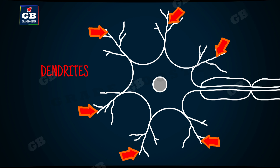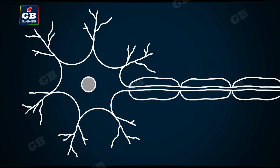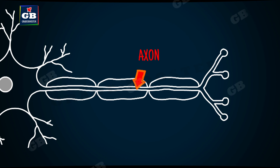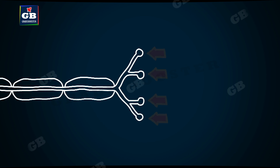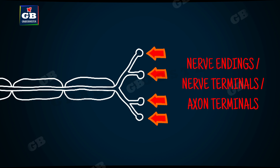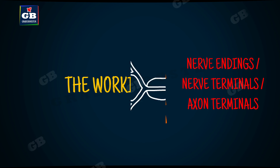These branch-like structures arising from the cell body are called dendrites. We also find a long fiber extending from the cell body. This long fiber is called the axon. At the end of the axon, we find some small branches called nerve endings. The tips of the axon are called nerve endings or nerve terminals.